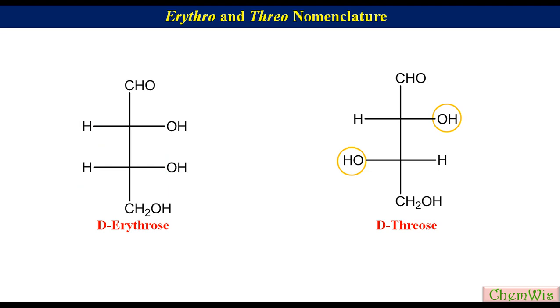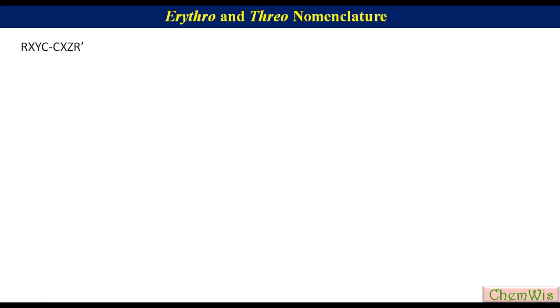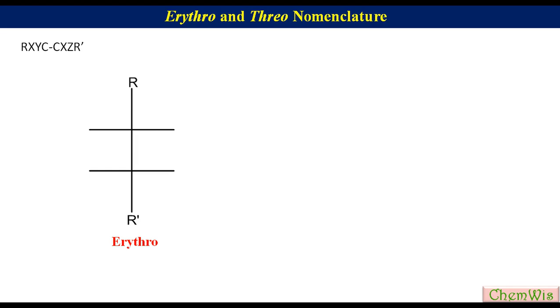If you have a system like R–C(X)(Y)–C(X)(Z)–R', you can apply this nomenclature. For drawing the erythro diastereomer, draw an 'A' skeleton for the Fischer projection, put groups R and R' on the vertical lines, and place the same groups X on one side, with Y and Z on the other side.